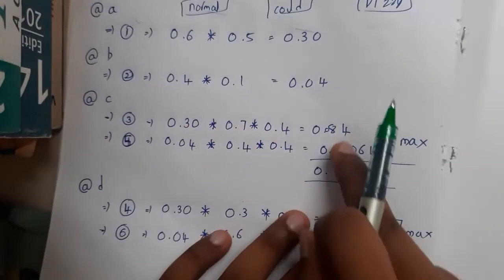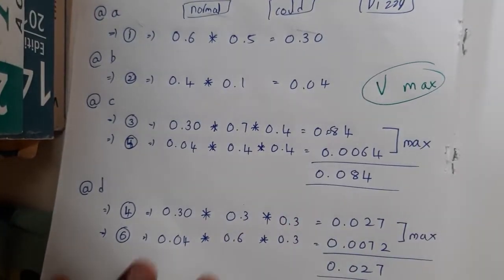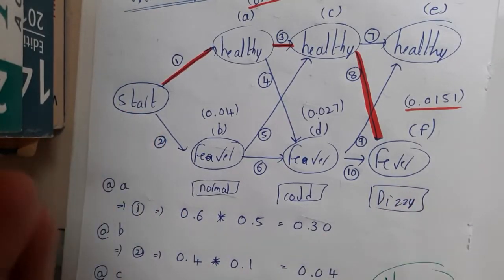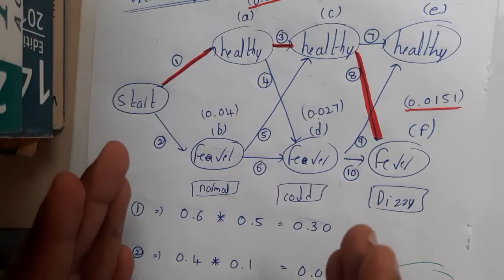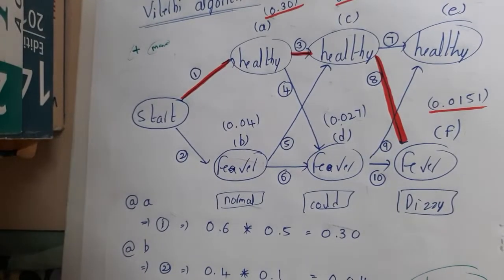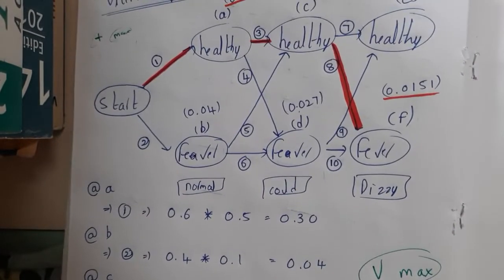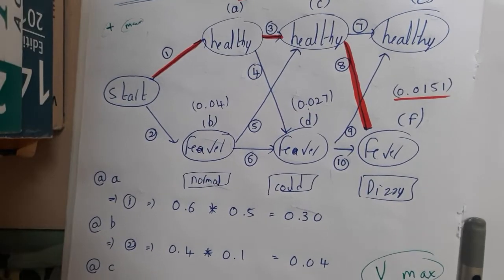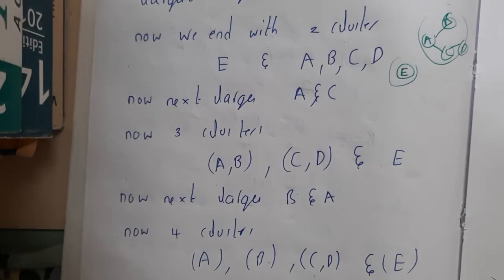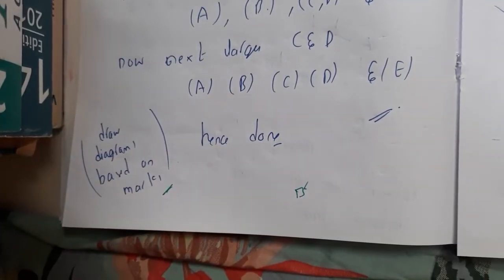Now we solve the same problem using the Viterbi Algorithm. The only change is: instead of adding the two incoming values, you take the maximum. Viterbi means max — write that down. Since you are only changing addition to max and not multiplying by different values, you will end up with the same hidden path solution. I hope everyone got a clear idea. This will be the last lecture for machine learning.